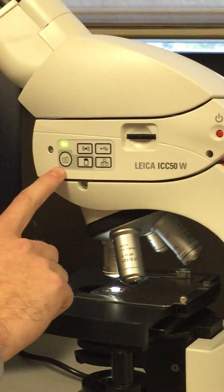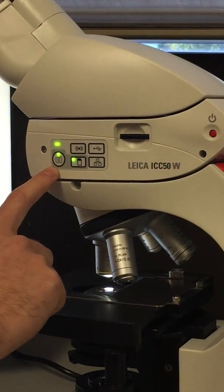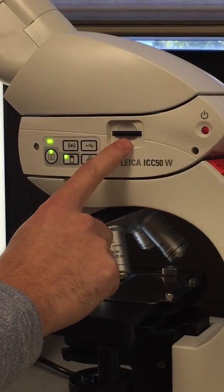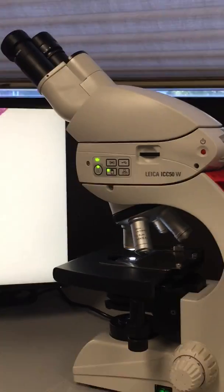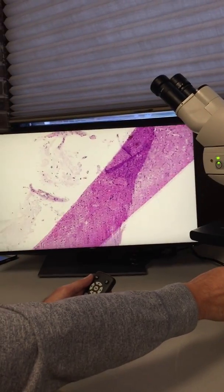The other button on the camera is the image capture button. By tapping this, you will capture an image directly to the removable SD card here. Now that the camera has booted up, you'll notice that you have a live, real-time image of your sample.